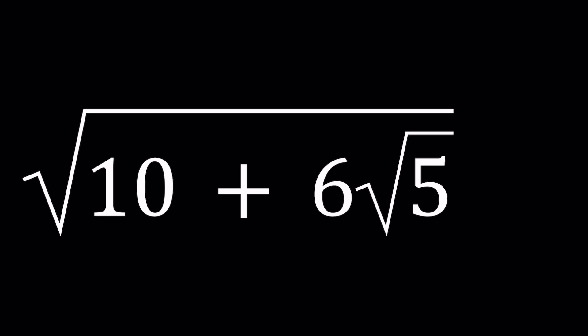A nested radical is a radical expression that contains another radical expression which come up in different situations, and some nested radicals can be written in a way that is not nested.